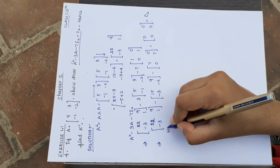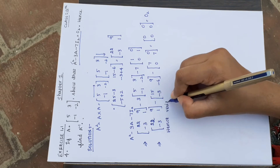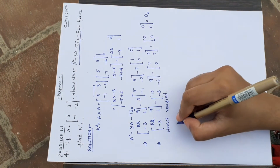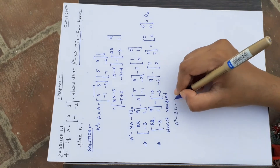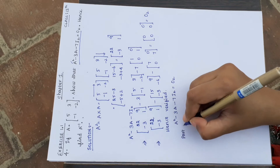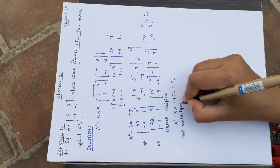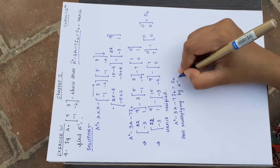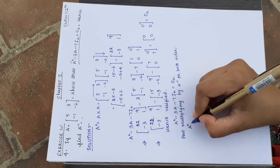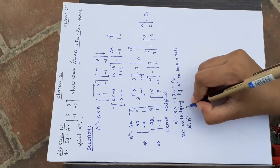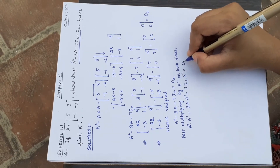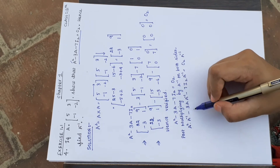Now find A inverse. We have the condition A square minus 3A minus 7I₂ equals null matrix of order 2. Post-multiplying by A inverse on both sides: A square times A inverse minus 3A times A inverse minus 7I₂ times A inverse equals null matrix times A inverse.